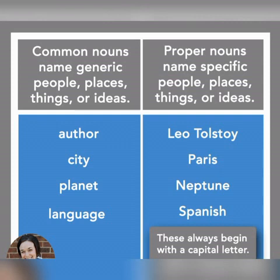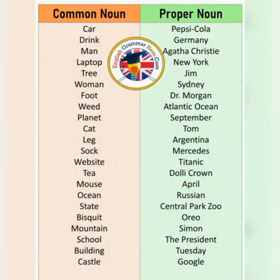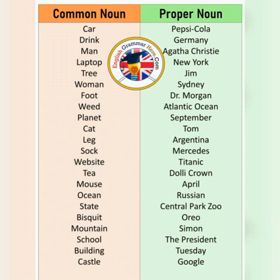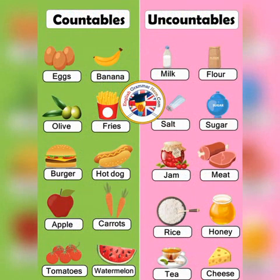If we talk about a specific language like Spanish or English, those come in proper nouns because they are specific names. Similarly, 'car' is a common noun, but if we take a specific car name like Corolla or Honda City, those come in proper nouns because they are specific. You can see a lot of examples here.